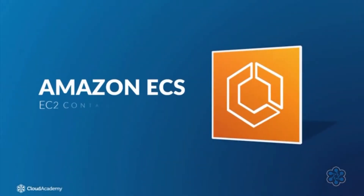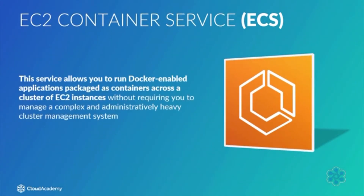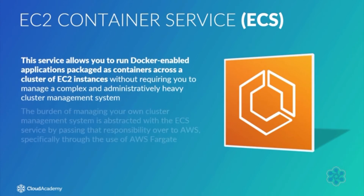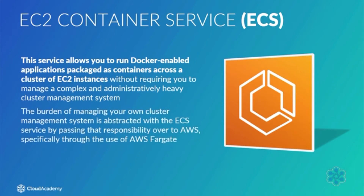Hello and welcome to this short lecture which will provide a high-level overview of the Amazon EC2 Container Service, commonly known as Amazon ECS. This service allows you to run Docker-enabled applications packaged as containers across a cluster of EC2 instances without requiring you to manage a complex and administratively heavy cluster management system. The burden of managing your own cluster management system is abstracted by passing that responsibility over to AWS, specifically through the use of AWS Fargate.